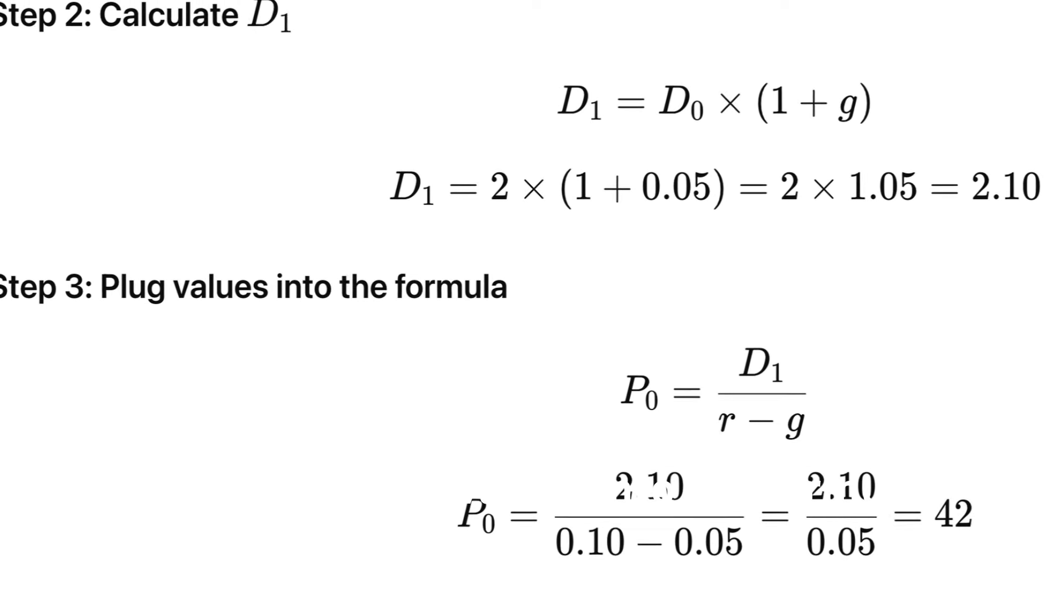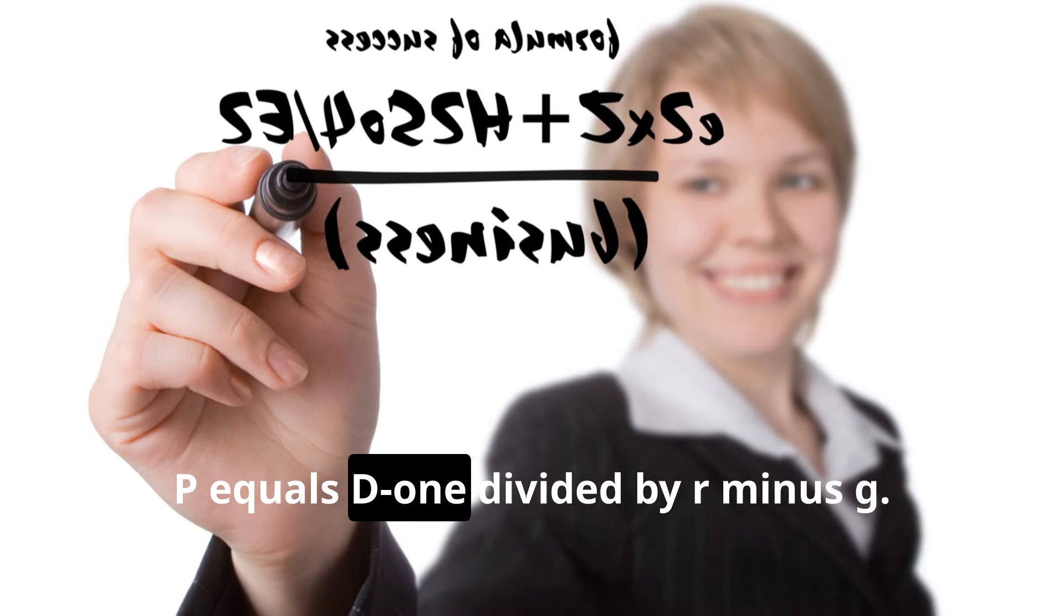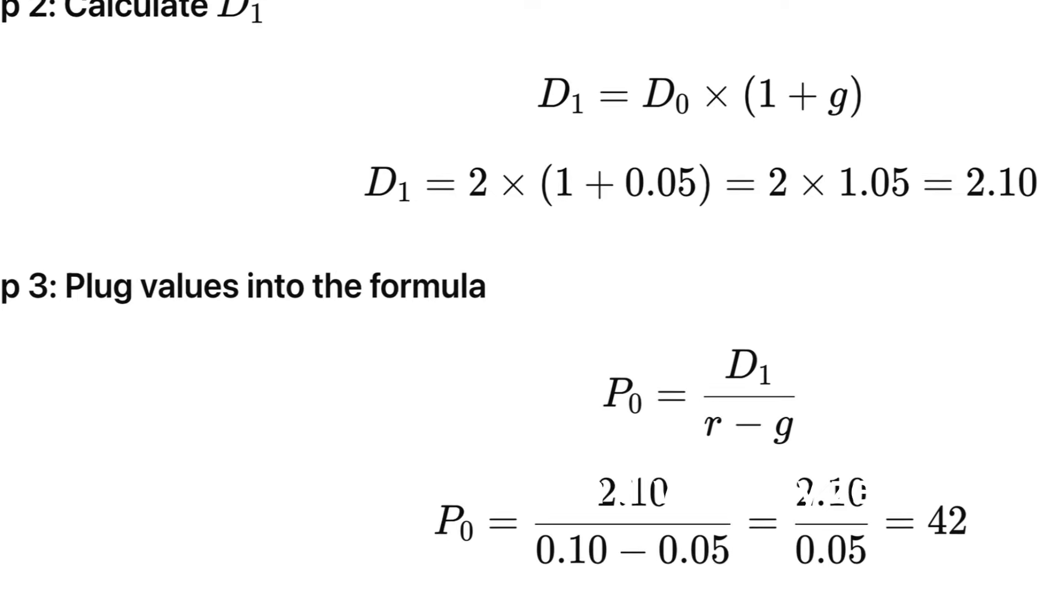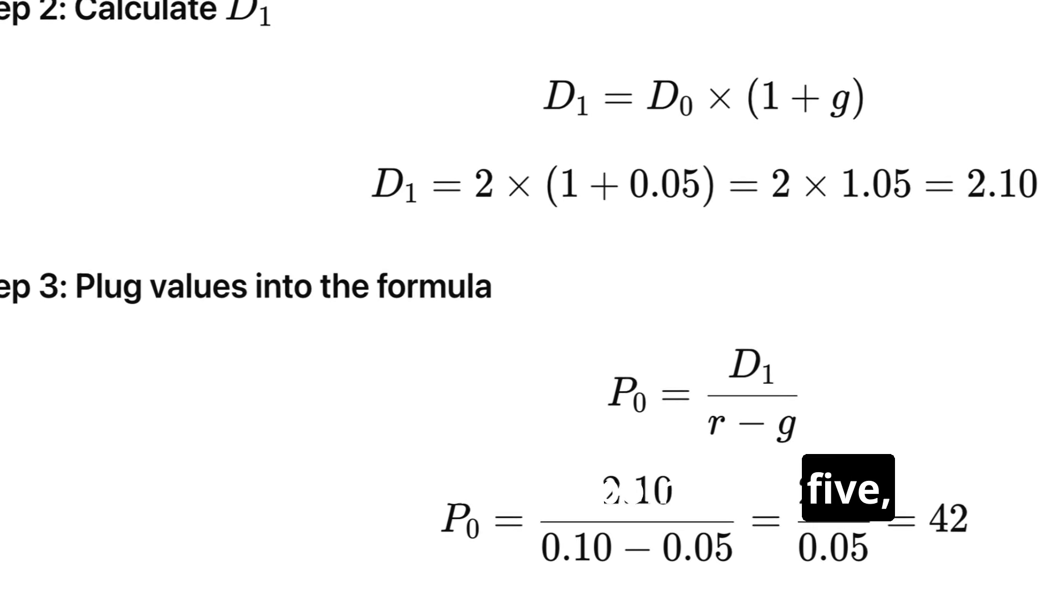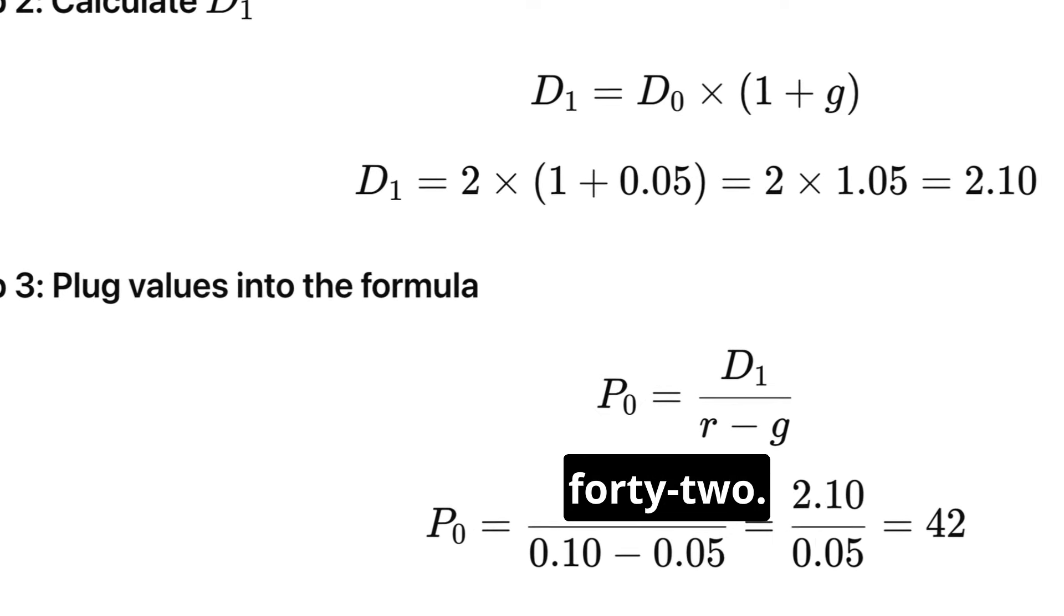Step 3: Plug values into the formula. P₀ = D₁ / (r - g). P₀ = 2.10 / (0.10 - 0.05) = 2.10 / 0.05 = 42.